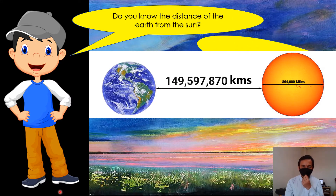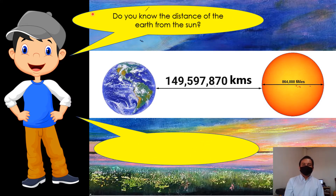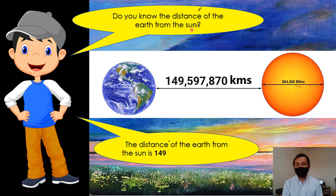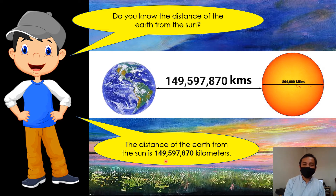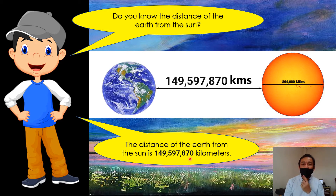I have a question. Do you know the distance of the earth from the sun? Okay, according to the study, the distance of the earth from the sun is 149,597,870 kilometers.